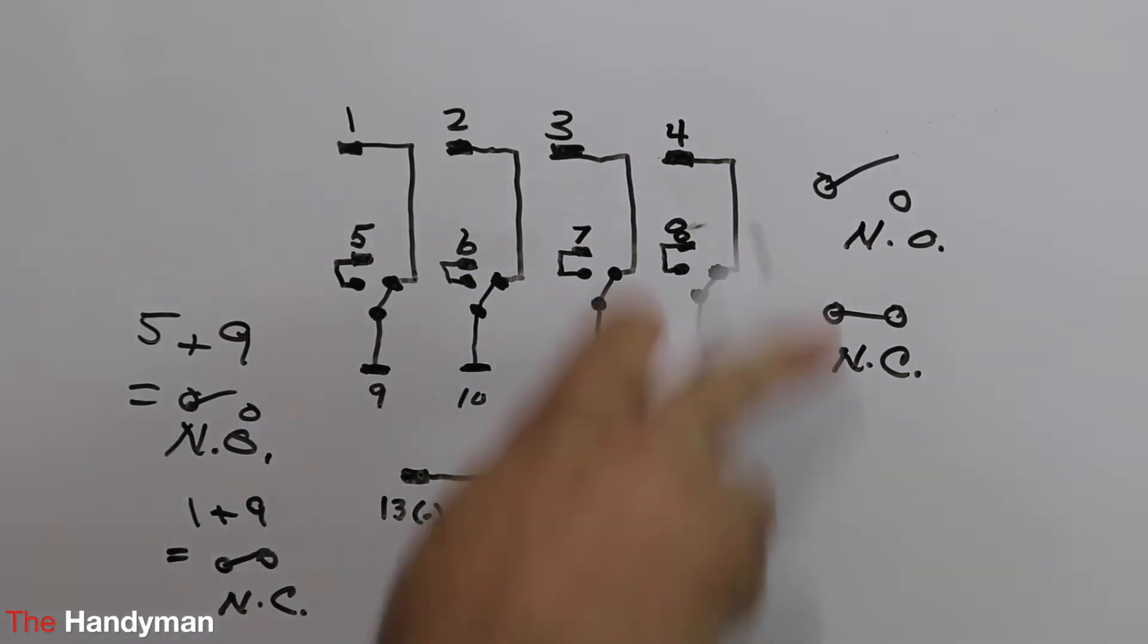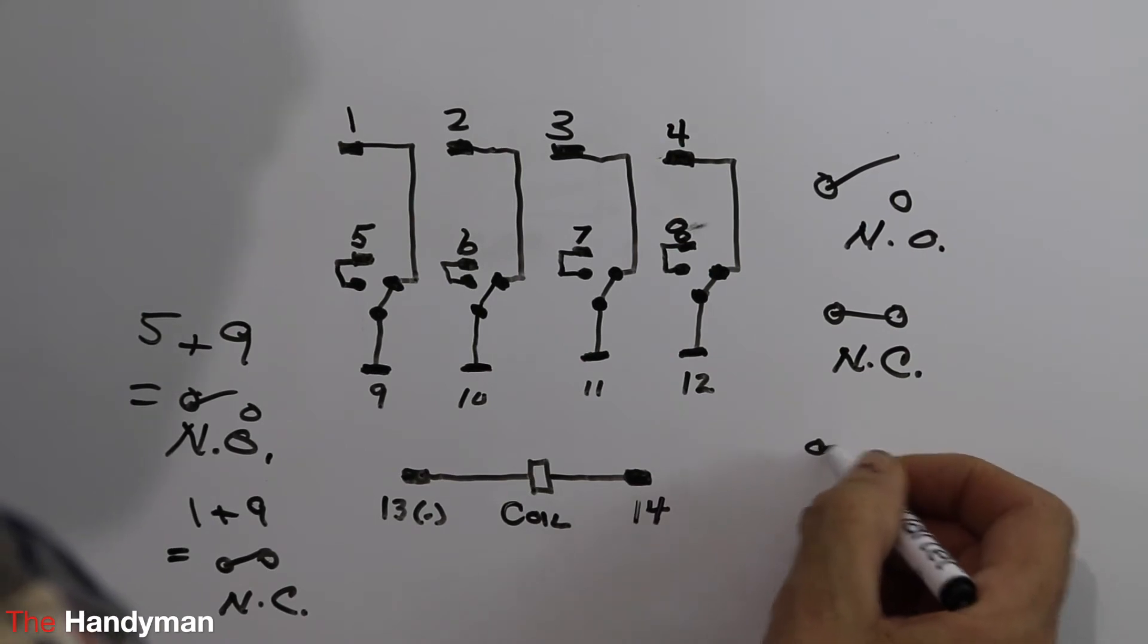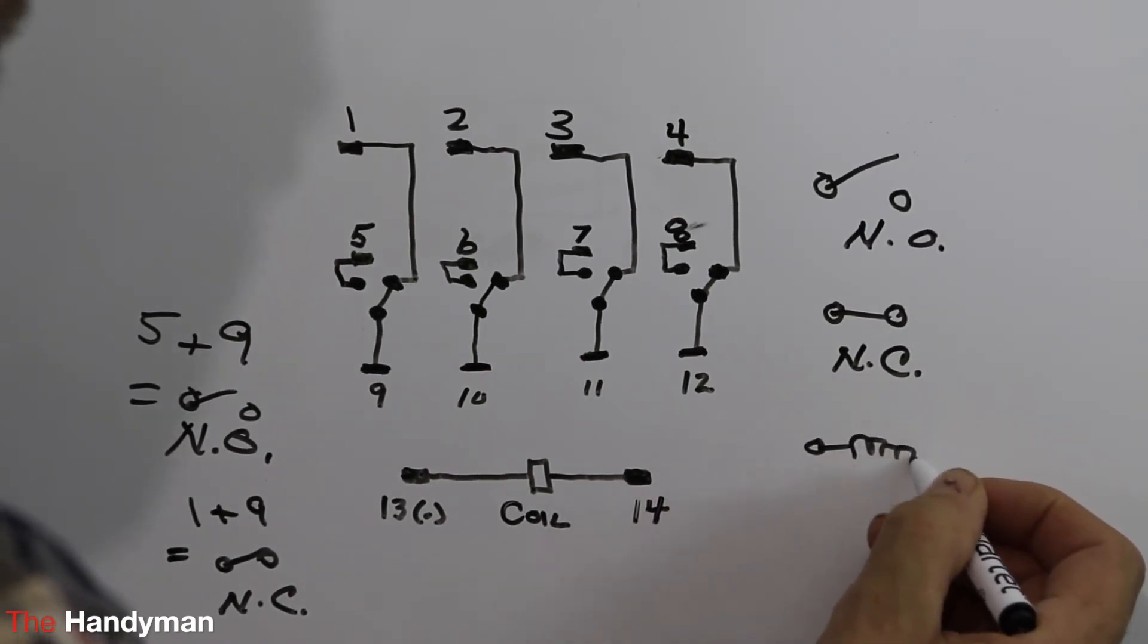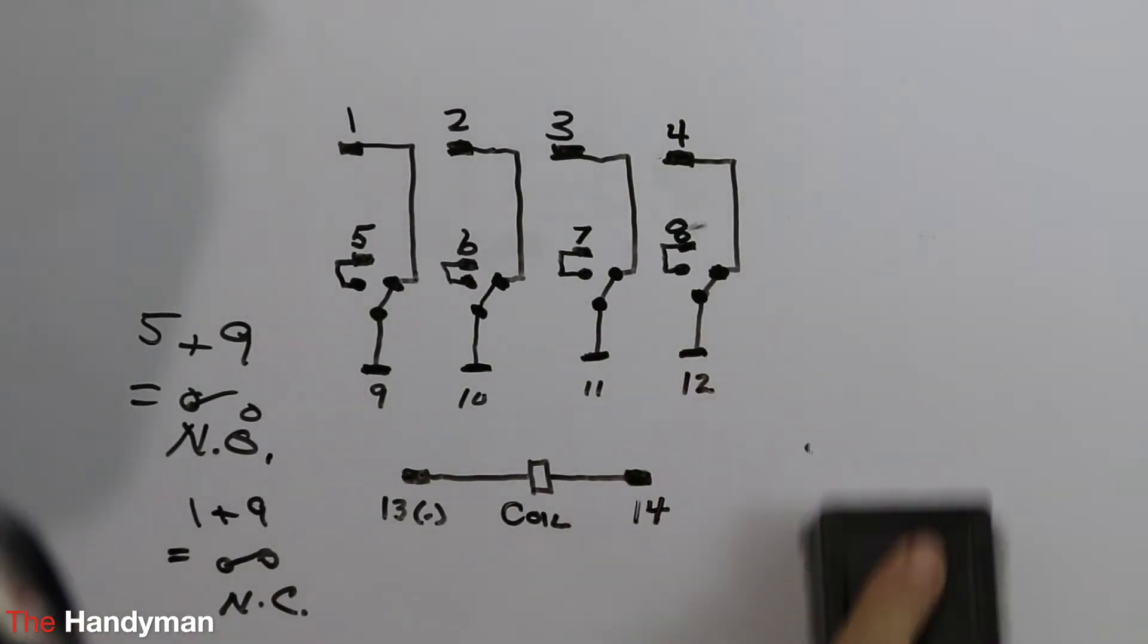And also, like I said before, coils can be represented like this, and that would be a coil. So let's get back to this explanation again.